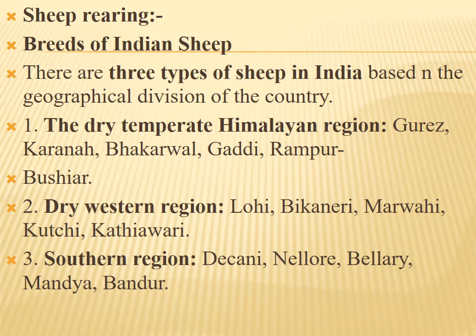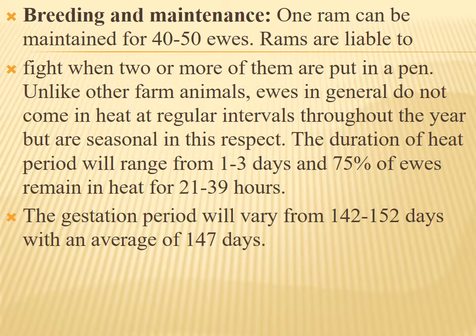Sheep rearing: there are three types of sheep in India based on geographical division. The dry temperate Himalayan region includes breeds like Buri, Karana, Bakarwal, Gaddi, and Rampur Bushair. The dry western region includes Lohi, Bikaneri, Marwari, and Kathiawari. The southern region includes Deccani, Nellore, Bellary, Mandya, and Bangur. One ram can be maintained for 40 to 50 ewes. Ewes do not come into heat at regular intervals throughout the year but are seasonal; the duration of heat ranges from one to three days, with 75 percent remaining in heat for 21 to 39 hours.